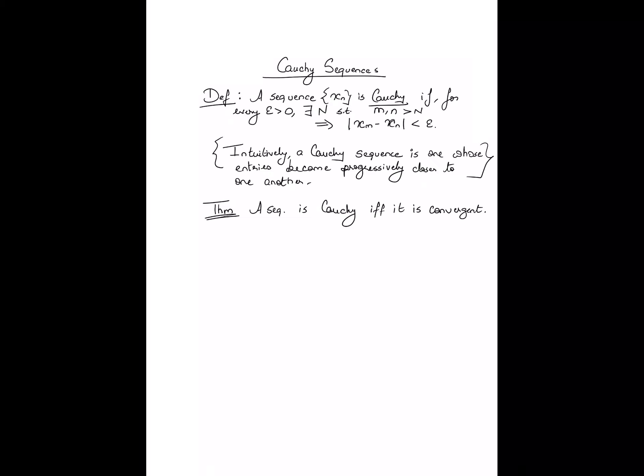This result gives us another way of establishing the convergence of a sequence without explicitly identifying the limit. Recall that in the original definition, to establish convergence you had to identify the limit and show that the distance between the entries and that limit becomes arbitrarily small. Here, you just have to look at the entries of the sequence, compare them to one another, and point out that so long as they are getting closer and closer to one another, the sequence is convergent.